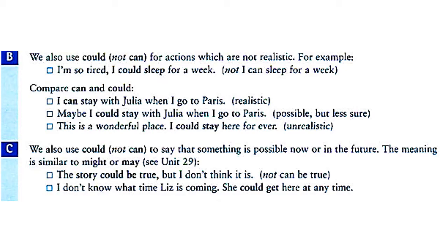We also use 'could,' not 'can,' for actions which are not realistic. For example: 'I'm so tired I could sleep for a week.' This is not real — not 'I can sleep for a week.' Compare: 'I can stay with Julia when I go to Paris' — realistic. 'Maybe I could stay with Julia when I go to Paris' — possible but not certain. 'This is a wonderful place, I could stay here forever' — unrealistic. So 'could' is used for unrealistic actions.